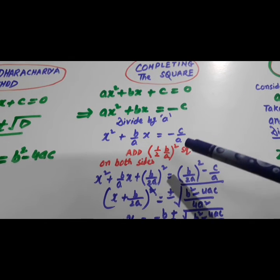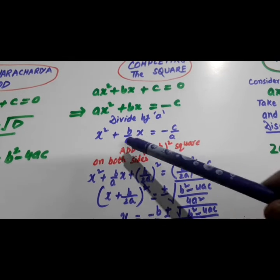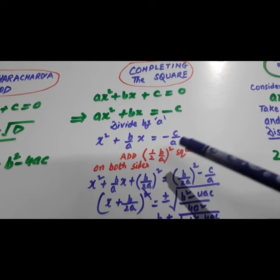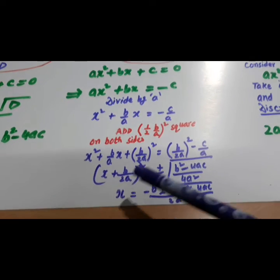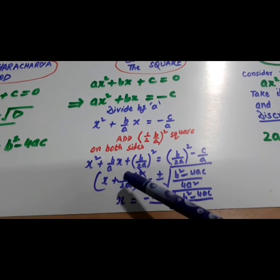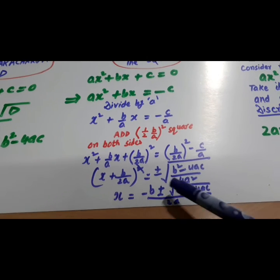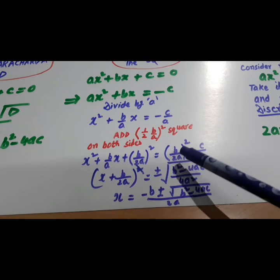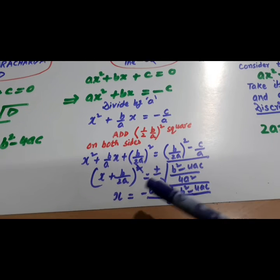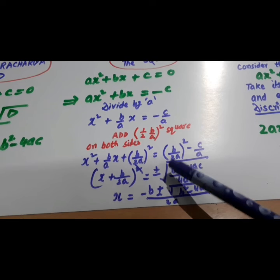You get x square plus B over A. Add half of this coefficient. That is half of B over A square on both sides. And this will be completed. And it has become x plus B over 2A whole square is equal to B square. Taking the sum it becomes B square minus 4AC over 4A square.